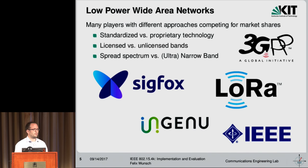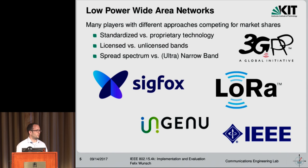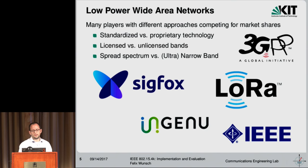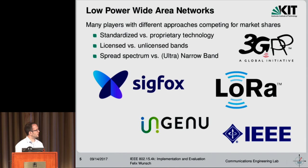In the meantime, standardization bodies haven't been sleeping, even though they weren't as quick as the proprietary vendors. For instance, 3GPP has standardized machine type communications, extended coverage GSM, and most importantly, narrowband IoT — those using the licensed bands. Another standards institution that has been active — this is a non-exhaustive list — is the IEEE, which standardized the DSSS PHY I was talking about in the beginning.